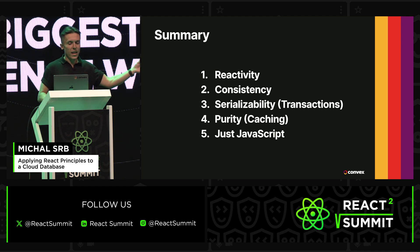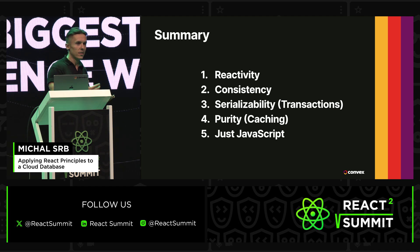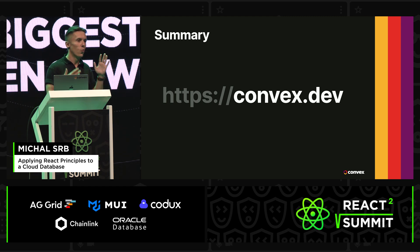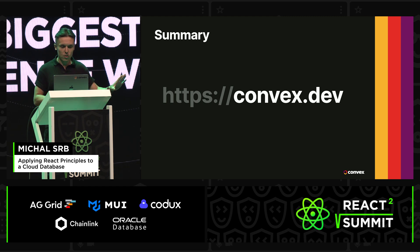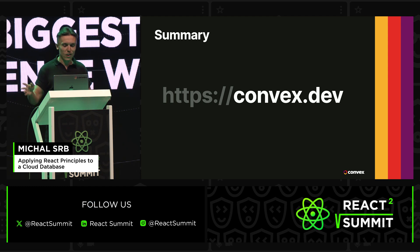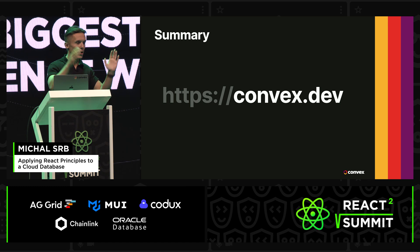So taking these five React principles and applying them to the full stack radically simplifies the building of apps and enables a better UX. And of course, this backend needs to scale with your needs, so we are building such a backend at Convex. It is fully open source, comes with a dashboard and a bunch of features — text search, file storage, scheduling, and more that I didn't get to talk about. So if you're interested, check it out or come ask me a question later. Thank you so much.